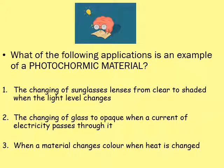Here's a quick multiple choice question: which of the following applications is an example of a photochromic material? Is it the changing of sunglass lenses from clear to shaded when the light levels change; the changing of glass to opaque when a current of electricity passes through it; or when a material changes colour when heat is changed? Give yourself about five minutes on that task, or just pause the video.